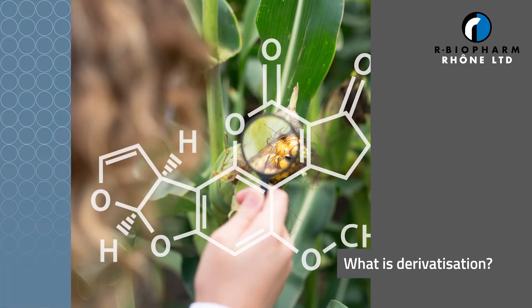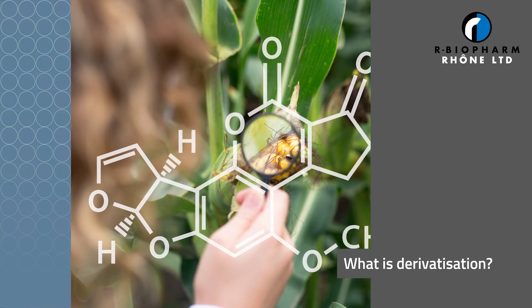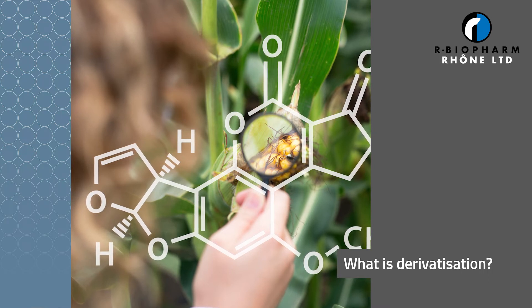Derivatization is a technique used to transform a chemical compound into a product of a similar chemical structure. During derivatization, the chemical structures of aflatoxin B1 and G1 are changed to a more fluorescent form, increasing the fluorescent signal in each case for detection by HPLC.